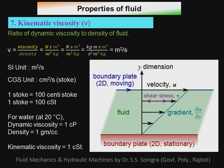For water at 20 degrees centigrade: dynamic viscosity is 1 centipoise, density is 1 gram per centimeter cube, and kinematic viscosity is 1 centistoke. You can remember these three values for water — they are easy to recall.